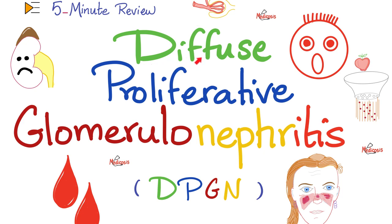When the patient has diffuse proliferative glomerulonephritis, you can bet the rent money — the patient has lupus.